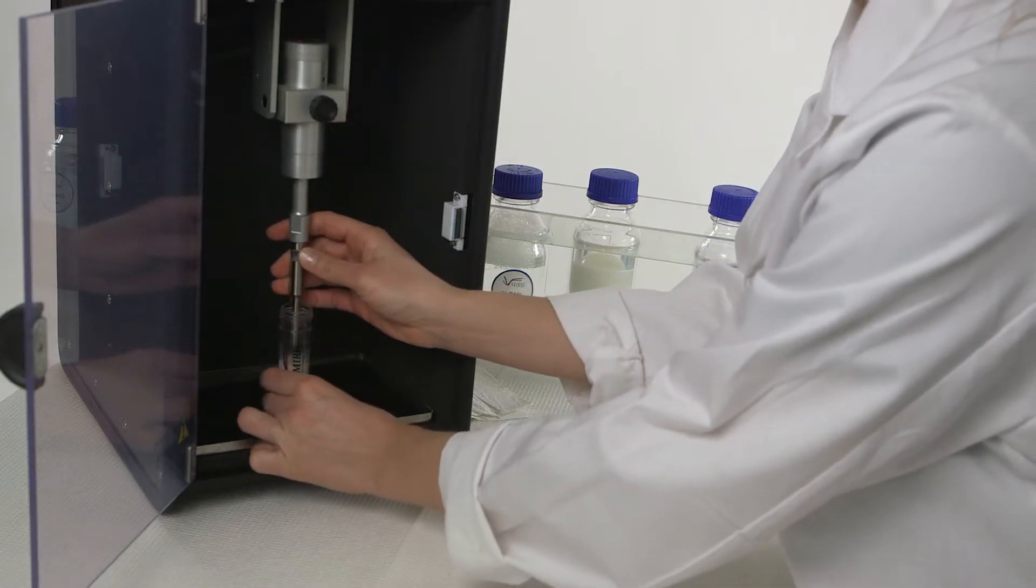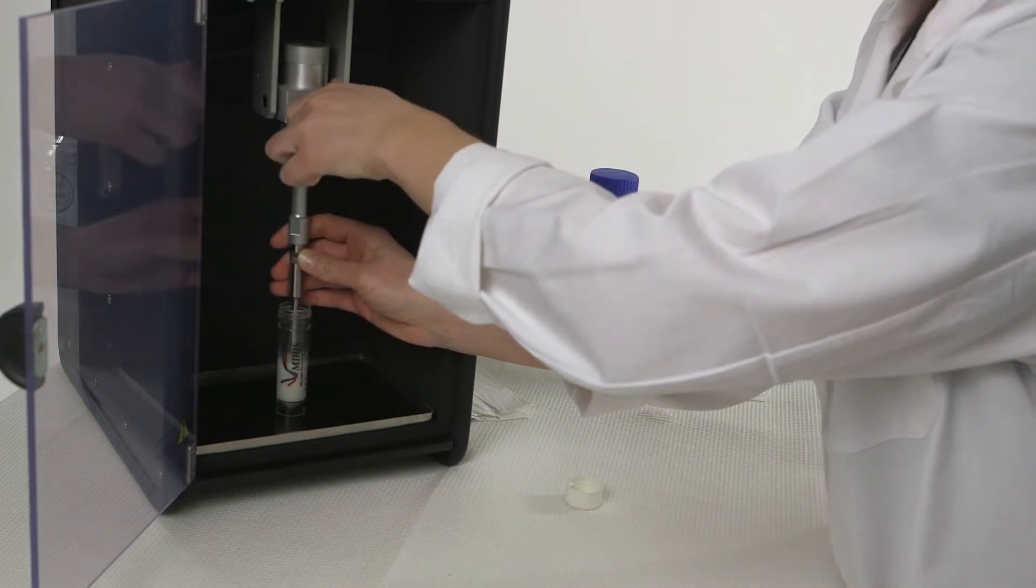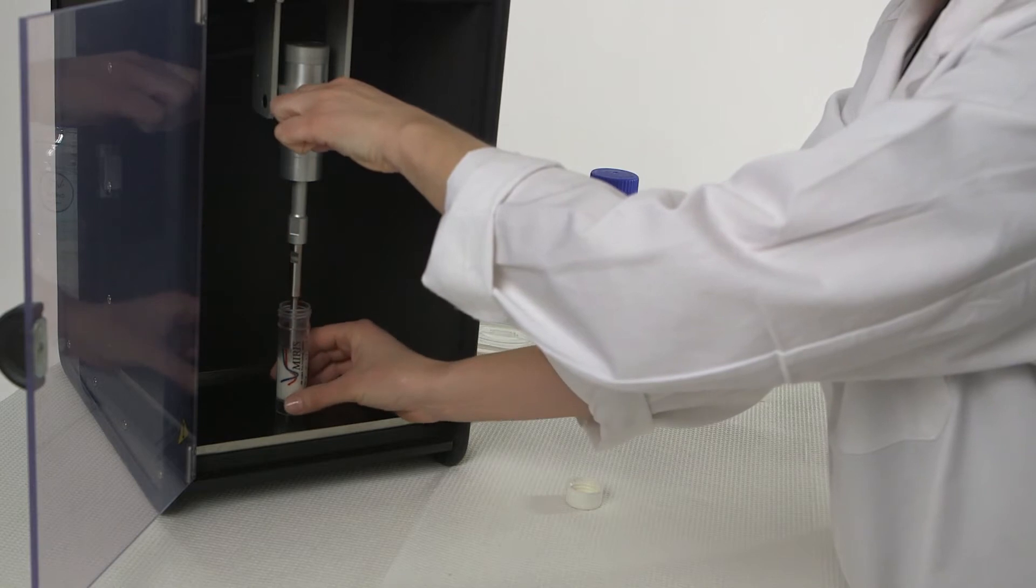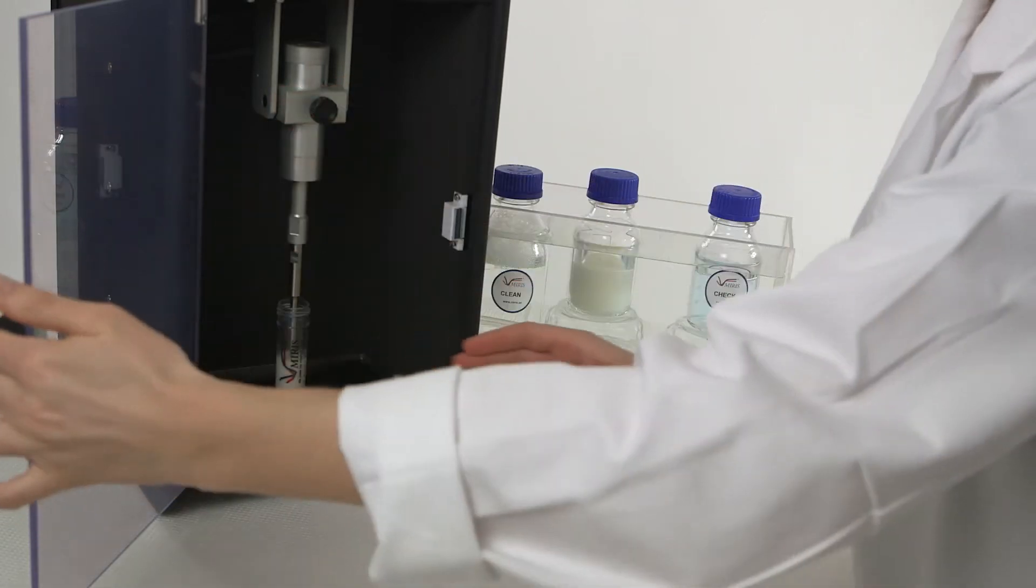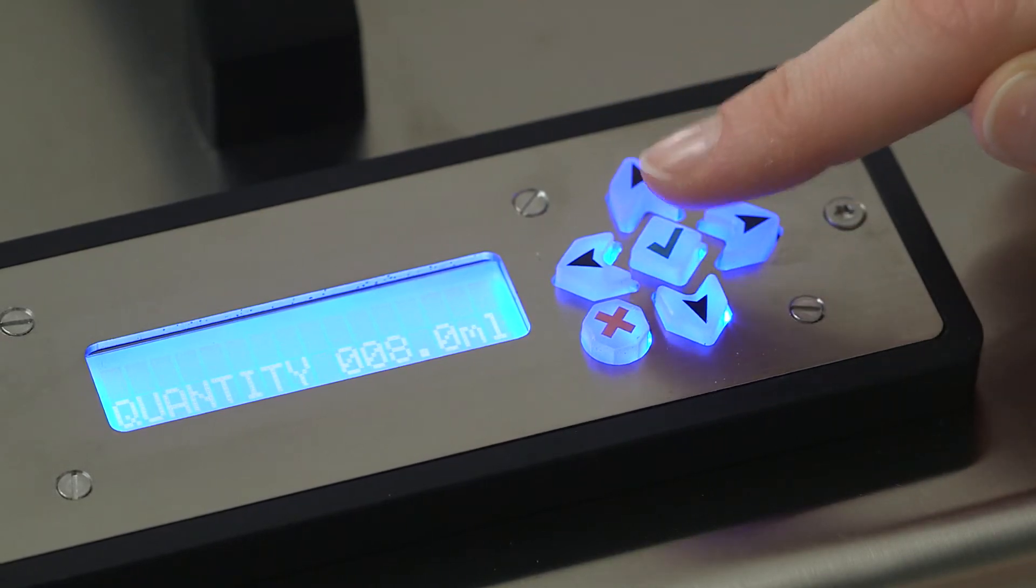All previously frozen samples must be ultrasonically homogenized with, for example, the MERS sonicator. Set the sonicator to the volume of the sample, and then the milk will be automatically homogenized with the correct time.